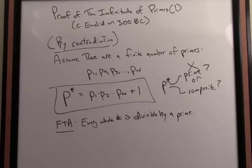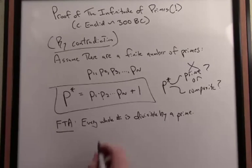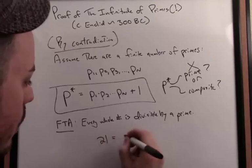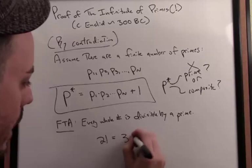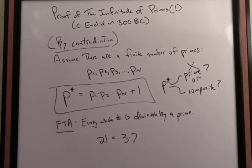So for instance, 21, that's a composite number. I can write that as 3 times 7. There's the prime factorization of that integer 21. So the Fundamental Theorem of Arithmetic says, again, every whole number is divisible by a prime.